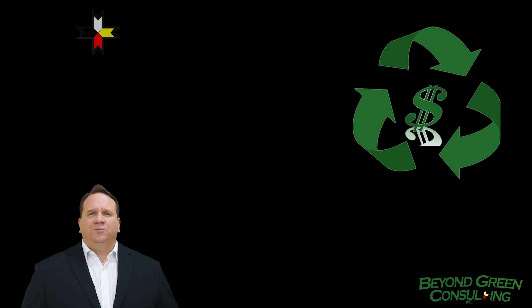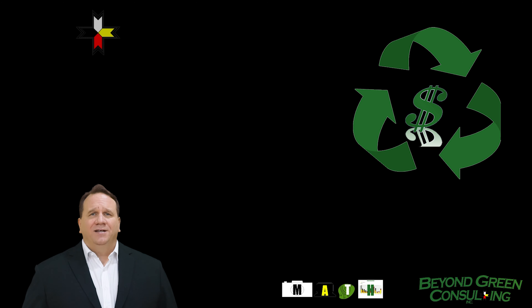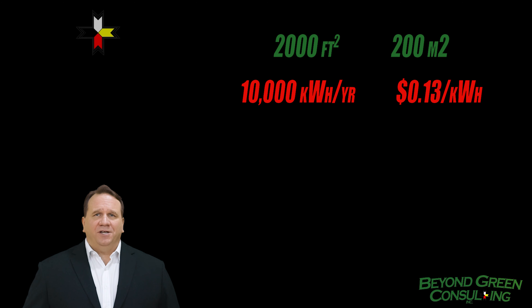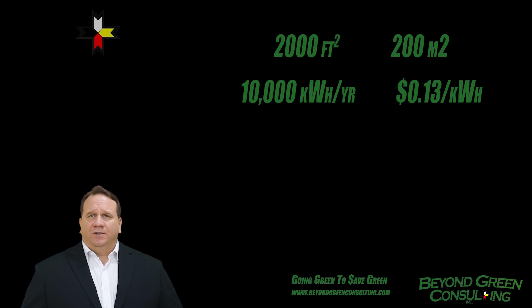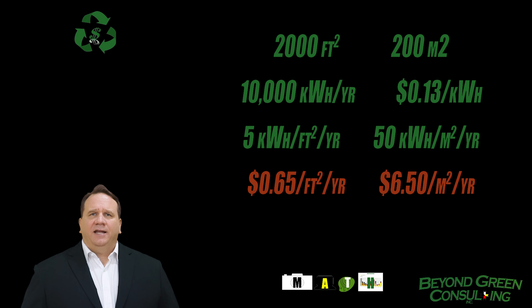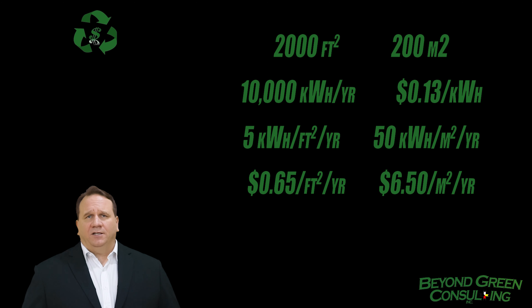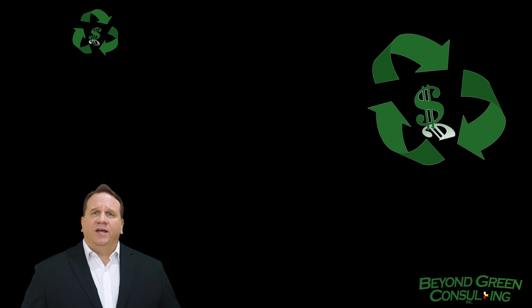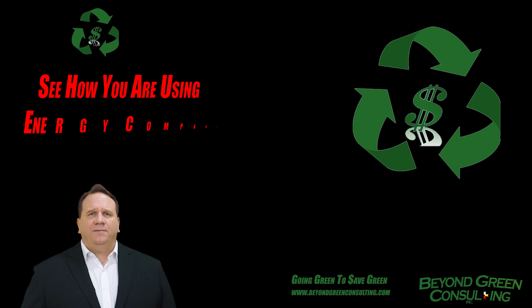A final way to look at your energy bill is to figure out how much energy your family uses according to the floor area of your house. For example, if you live in a 200 square meter or 2,000 square foot home and use 10,000 kilowatt hours per year at 13 cents per kilowatt hour — the average US kilowatt hour cost for residential customers — you use 50 kilowatt hours per square meter or 5 kilowatt hours per square foot each year. That is 65 cents per year per square foot for electricity.